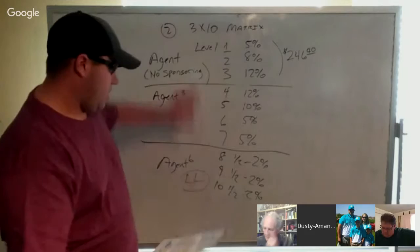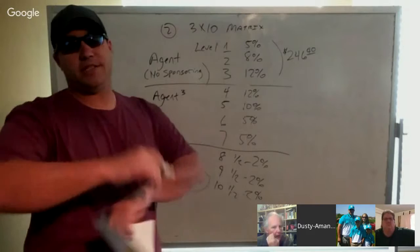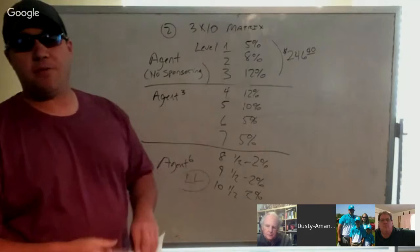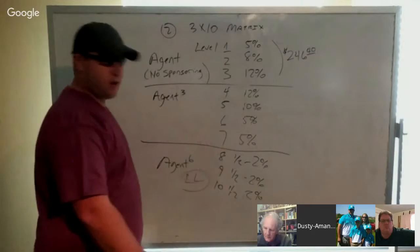If someone goes inactive in our matrix, just as in our enrollment lineage with all of our fast start money, check matching, and everything, we use dynamic compression. The computer automatically reads it, compresses everything up, so there's nothing missed to the distributors that have earned it. Are we good there? Thumbs up? We're good.